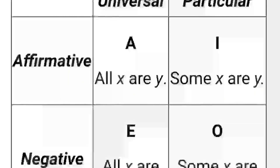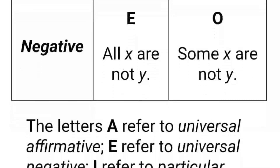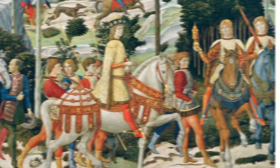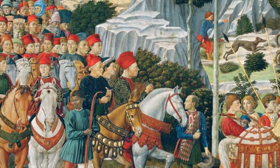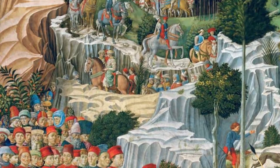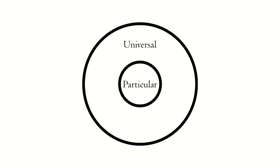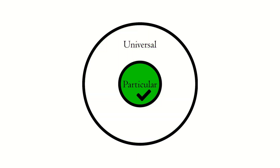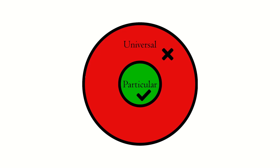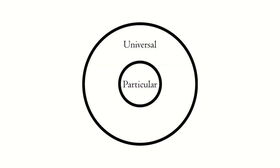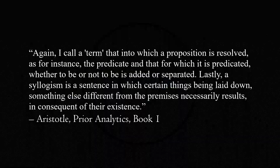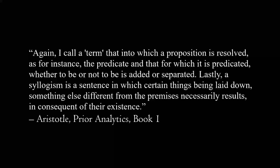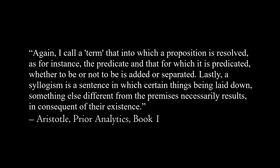In addition, affirmative and negative propositions can also be divided into universal or particular. The proposition 'all men have souls' is universal, while the proposition 'some men have souls' is particular. The particular proposition is subordinate to and contained by the universal one: if the universal is true then the particular is also true, but if the particular is true then the universal may be true or false. The same principle also applies to negative propositions. A term is that into which a proposition is resolved — the predicate and that for which it is predicated, whether or not it is to be added or separated.